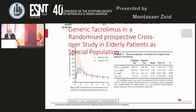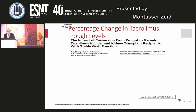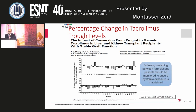In a randomized prospective crossover study in elderly patients as a special population, the area under the curve was noticed to be lower with the original tacrolimus compared to the generic tacrolimus. The percentage change in tacrolimus trough level was assessed following conversion from Prograf to generic tacrolimus in liver and kidney transplantation. Following switching between formulations, patients should be monitored to ensure systemic exposure is maintained.